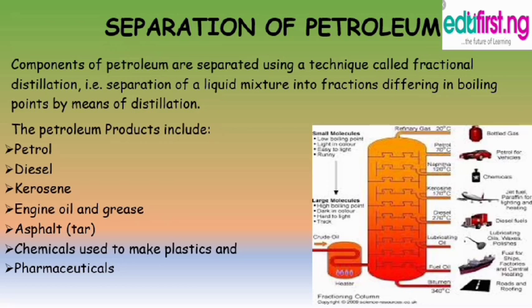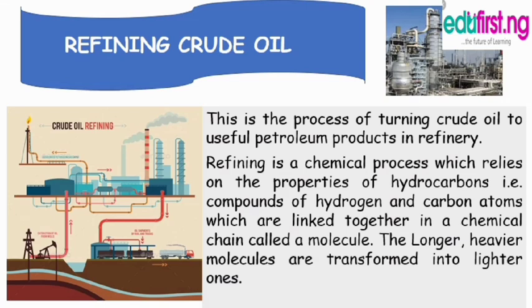After the process, the petroleum products include petrol, which is mainly used by various machines and vehicles; diesel, also used by vehicles; kerosene; engine oil and grease; asphalt used in construction; and chemicals such as plastics used in the plastic industry and pharmaceutical raw materials.